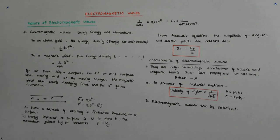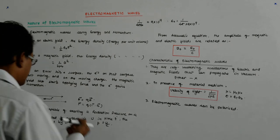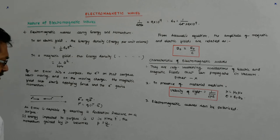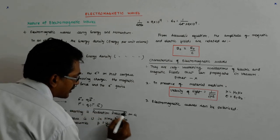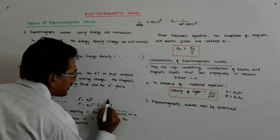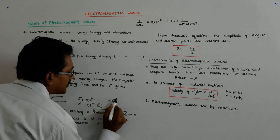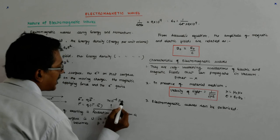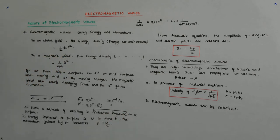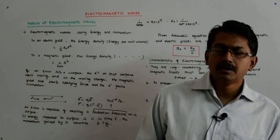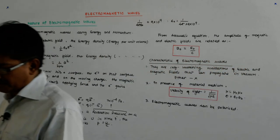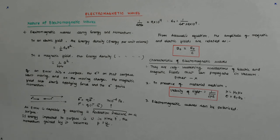Now, the radiation pressure by visible light, it was measured and found to be 7 into 10 to the power minus 6 Pascal. That is the radiation pressure by the visible part of the light. The visible light.